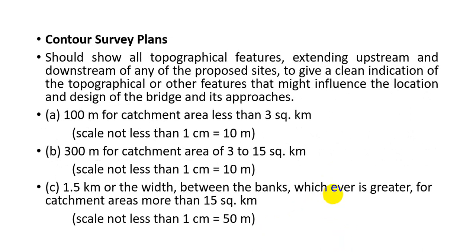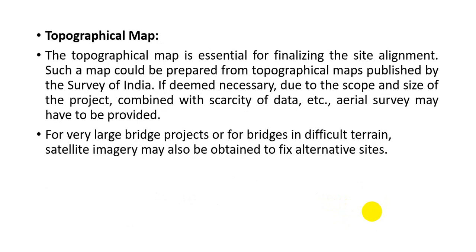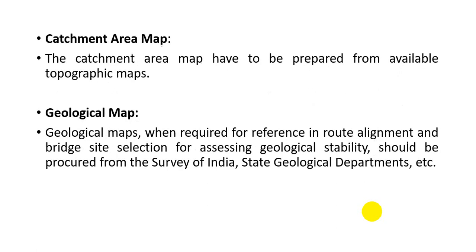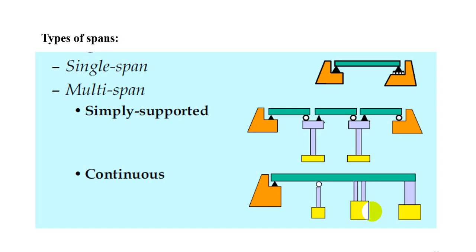For catchment areas less than 3 square kilometers, 100-meter contour intervals are used; for larger areas, 300-meter intervals are used — as catchment area increases, the survey plan scale also increases. Topographical maps may also be obtained from the Survey of India. A geological map can be obtained from the state geological department. Regarding types of spans: a single span has one hinge support and one roller support. Simply supported multi-span bridges have multiple spans each on hinge and roller supports. Continuous spans are also possible.